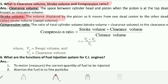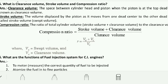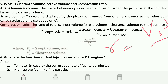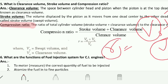Next is compression ratio. The compression ratio is the ratio of total cylinder volume — that is, stroke volume plus clearance volume — to the clearance volume. It is denoted as: r = (Vs + Vc) / Vc, where Vs is the swept volume, Vc is the clearance volume, and r is the compression ratio.